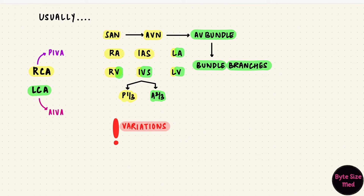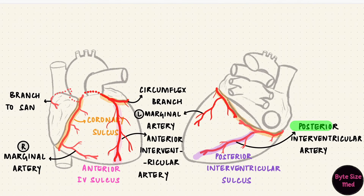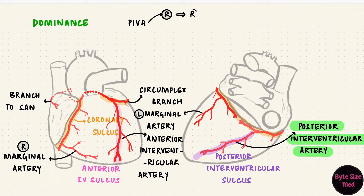One of the most important variations concerns the origin of the posterior interventricular artery, which determines something called dominance. It mostly arises from the right coronary artery — that's right dominance. But if it arises from the left coronary artery, that's left dominance.